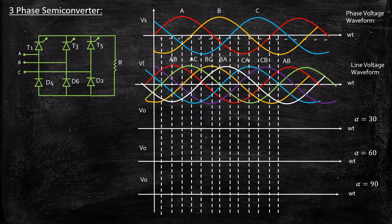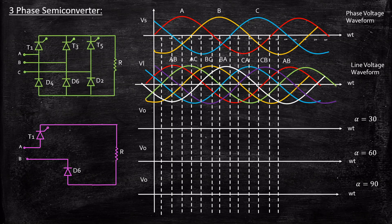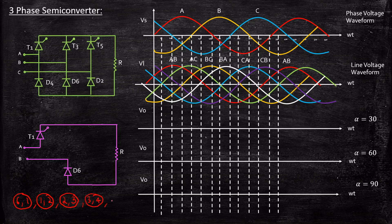Let's consider how the circuit operates, and based on that we can examine what happens for Vout at alpha equal to 30, 60, and 90 degrees respectively. The pattern of triggering follows the sequence: 6-1, 1-2, 2-3, 3-4, 4-5, 5-6 — just like the fully controlled rectifier, except here we have diodes instead of thyristors for the lower legs. One important observation: we only have three thyristors, so overall 360 degrees divided by three means every 120 degrees we trigger T1, T3, and T5.